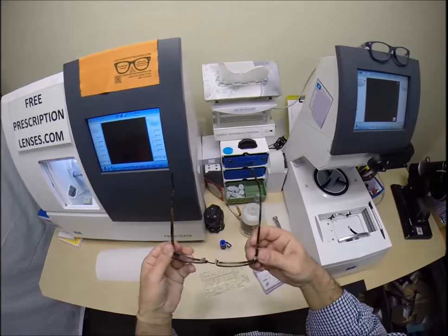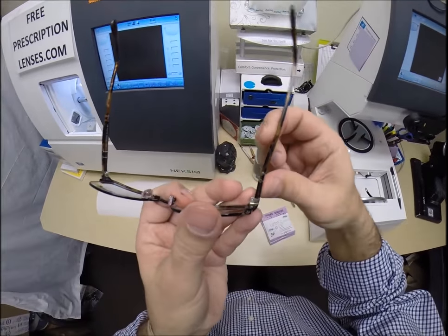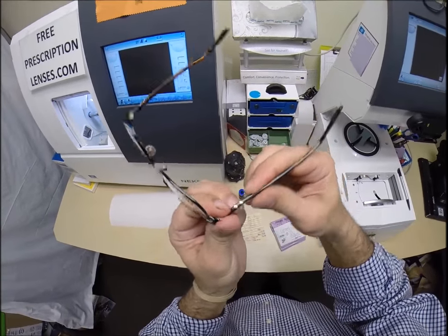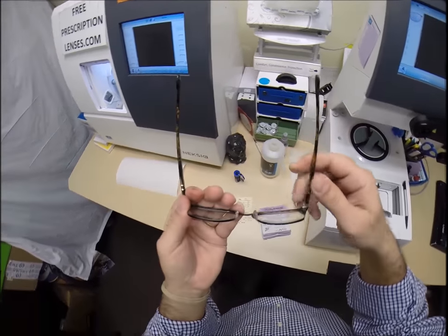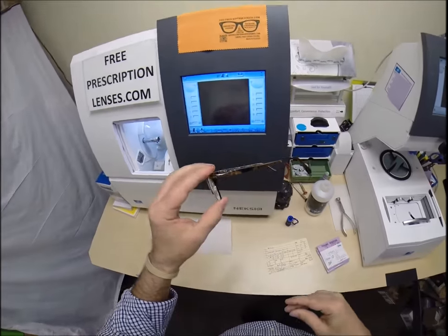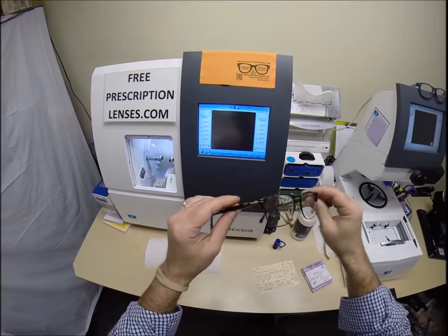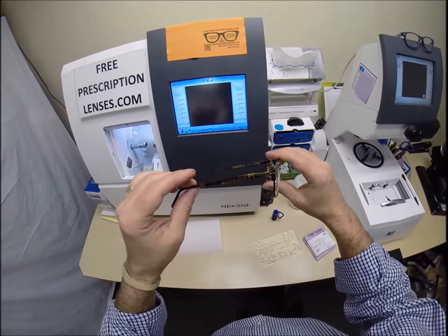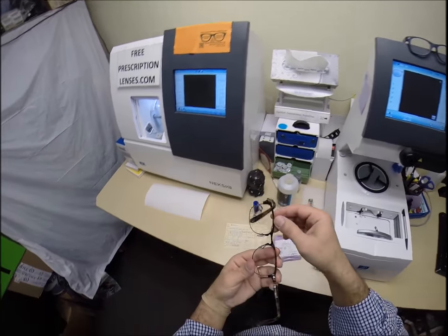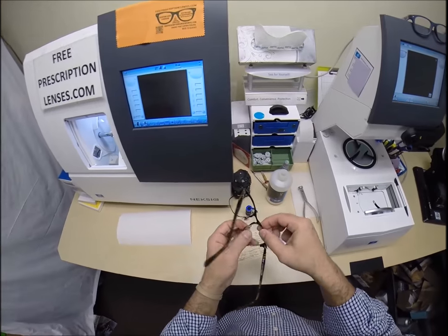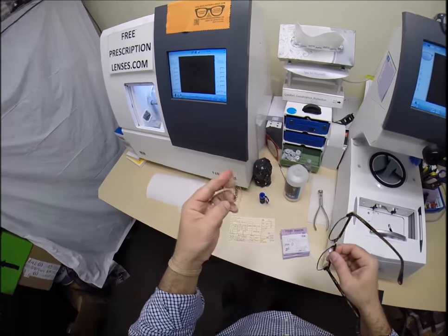Persols are really nice frames made in Italy. Have a very unique spring hinge system built in without a real spring but it flexes right there. Very unique. No other frame company does this and Persol is actually one of the oldest frame companies in existence, always being in Italy, always making great products. However, I'm not an authorized dealer so he has sent me his frames for me to install the lenses.